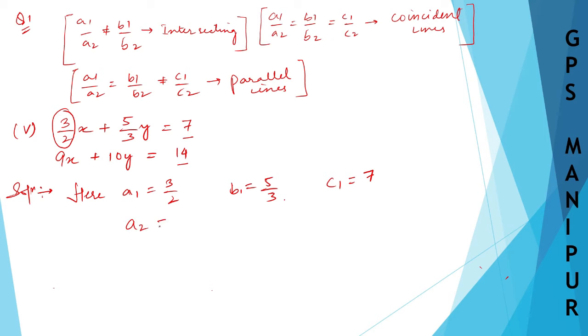So A2 is equal to 9, B2 is equal to 10, and C2 is equal to 14.